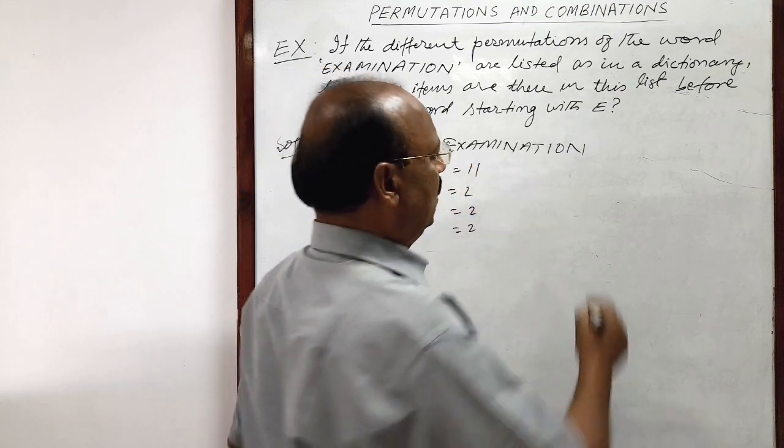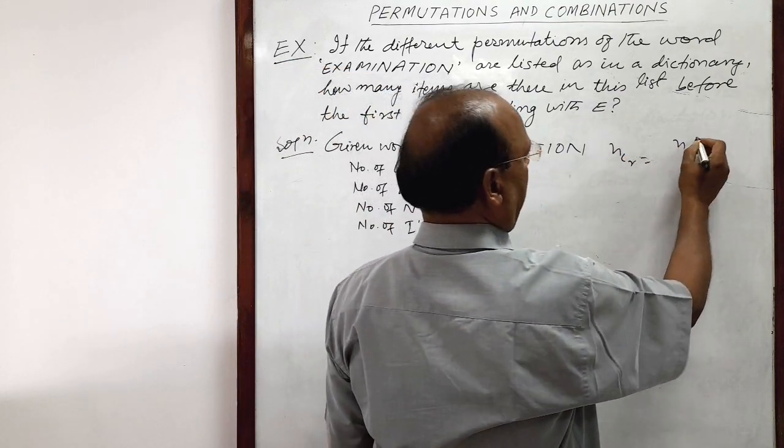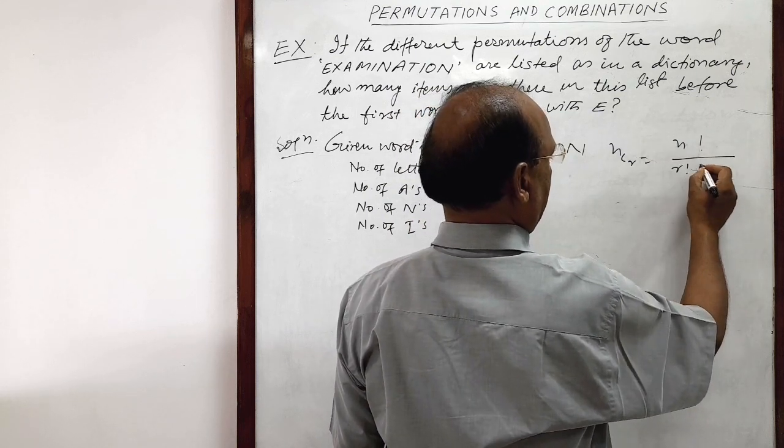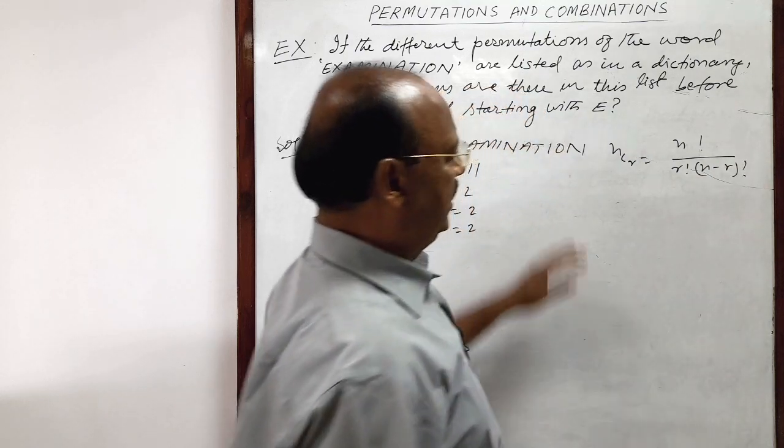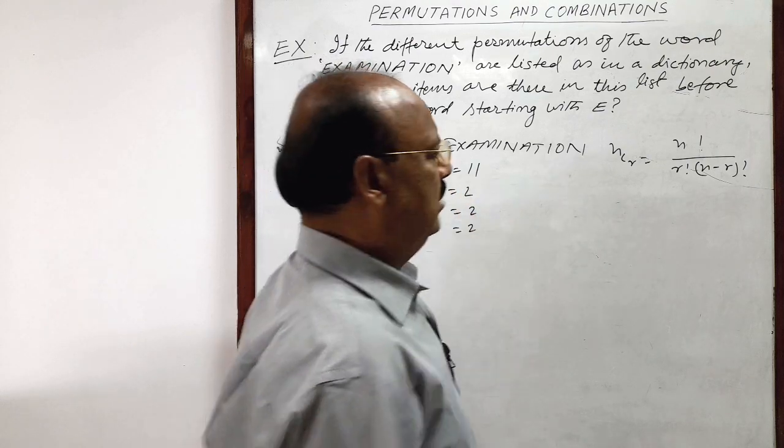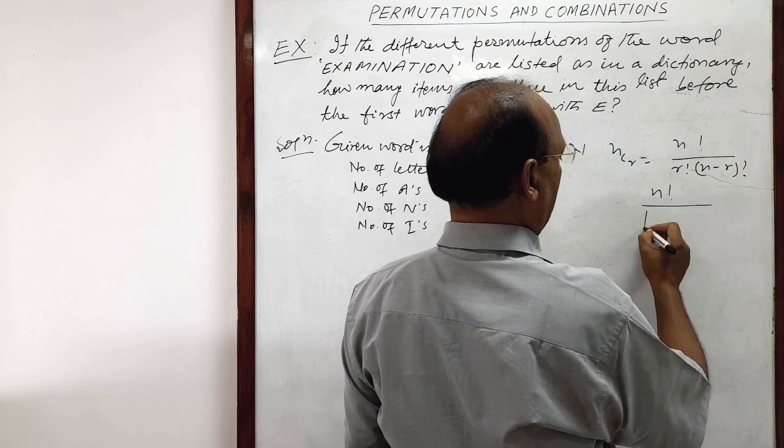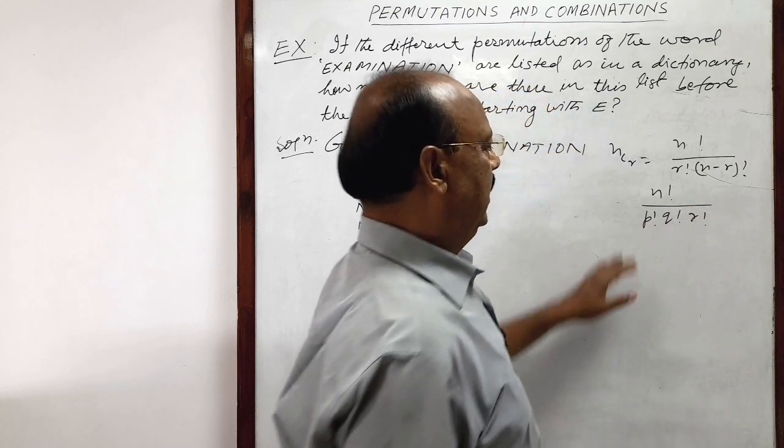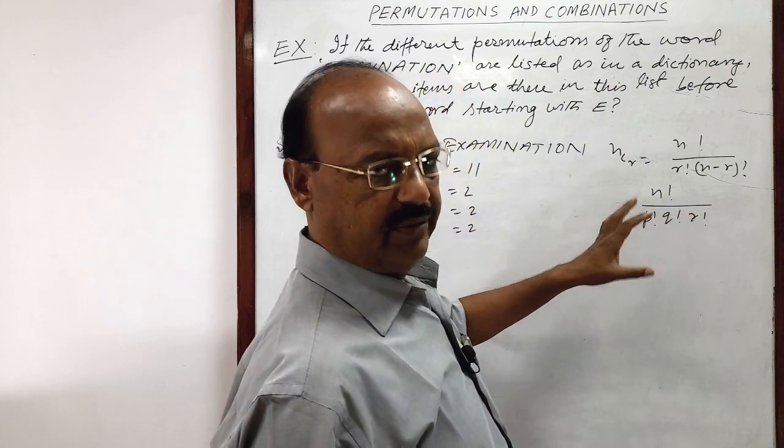So, you know the formula, where we can use nCr is equal to n factorial by r factorial times n minus r whole factorial. So, for combination we use this formula and when number of repetitions are there, then we use the formula n factorial by p factorial q factorial r factorial, where p, q, r are number of repetitions of different objects.